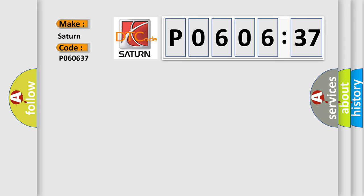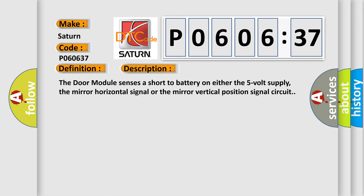The basic definition is Mirror control sensor position circuit, circuit short to battery. And now this is a short description of this DTC code. The door module senses a short to battery on either the 5-volt supply, the mirror horizontal signal, or the mirror vertical position signal circuit.